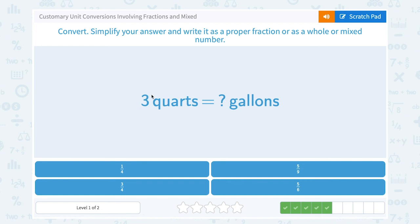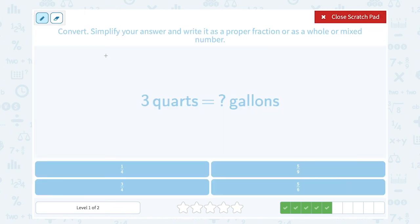This time they told us 3 quarts is equal to blank gallons. I want to know how many quarts are in a gallon. Well, there's 4 quarts in 1 gallon, or we can say 4 quarts are equal to 1 gallon.